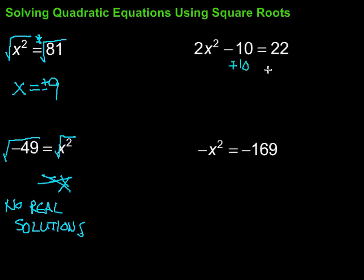Do the opposite, of course. So plus 10, both sides of our equation. Then bring down what I have left on the left side here. I have 2x squared equals 22 plus 10. 22 plus 10 is 32.